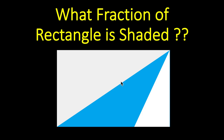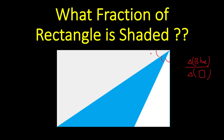In this problem, we are given a rectangle with a triangle inside it, and that triangle's area is shaded in blue. We have to find what fraction of the complete rectangle area is occupied by this blue shaded region. The conditions given are that this is a rectangle with all 90-degree angles and equal opposite sides, and that all three marked angles are equal. Pause the video, solve it yourself, then come back.